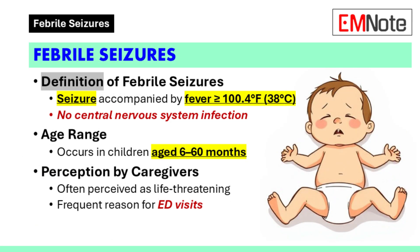Febrile seizures are common in young children. These seizures occur in children aged 6 months through 60 months. A febrile seizure is defined as a seizure accompanied by a fever of at least 100.4 degrees Fahrenheit or 38 degrees Celsius without central nervous system infection. Caregivers often perceive these events as life threatening, and febrile seizures are a frequent reason for emergency department visits.